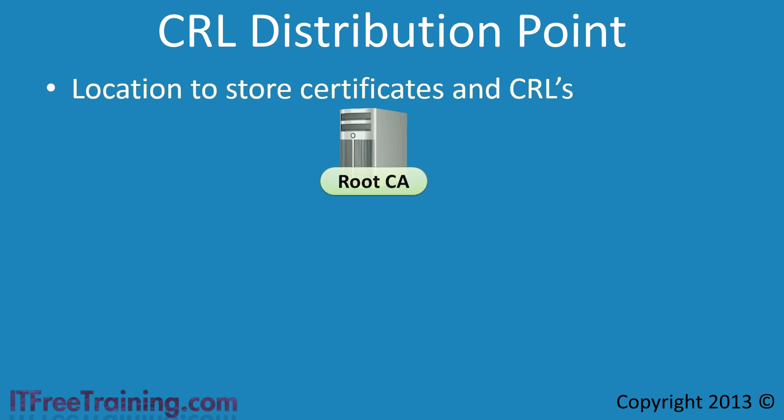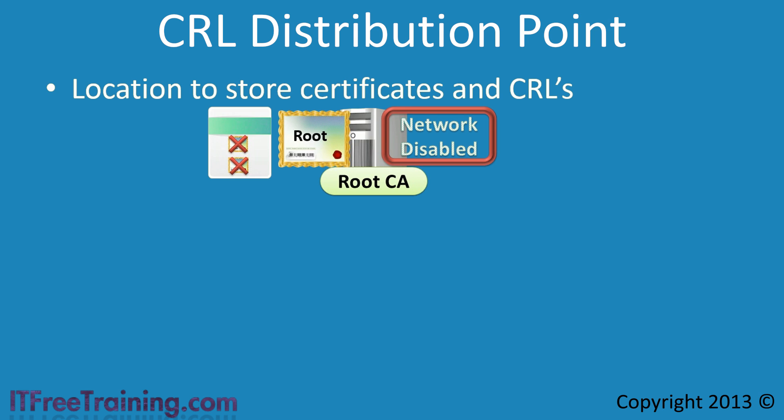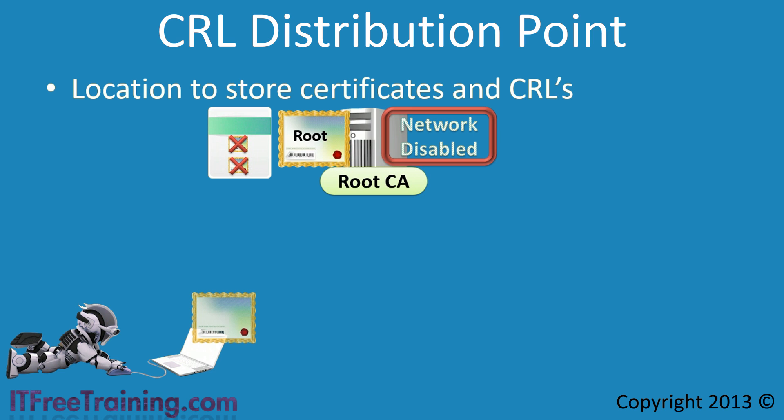In another video I installed the root CA. This CA has the network card disabled so the root CA cannot access the network. This helps protect the private key on the server. On the root CA is a certificate holding its public key and a certificate revocation list. Consider a client that has obtained a certificate — before the certificate is used, the client should check that it is valid and from a trusted source. This is standard practice, and the client should not use a certificate unless it can verify it is valid and from a trusted source.